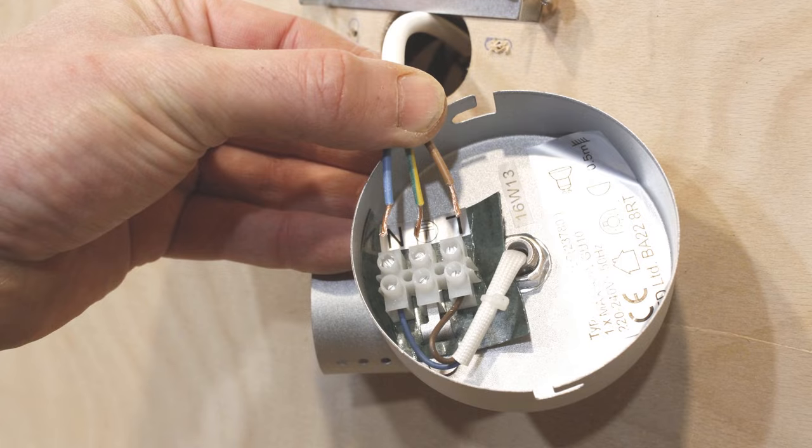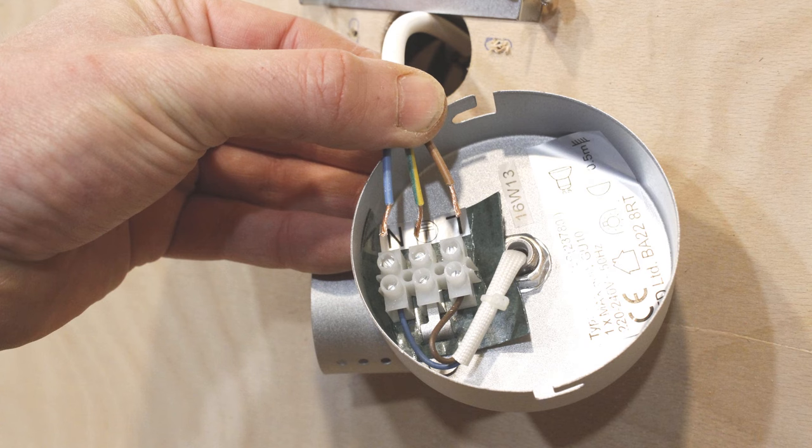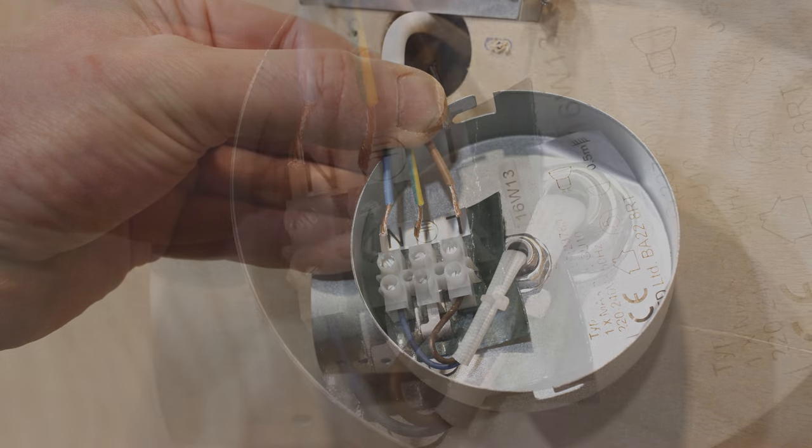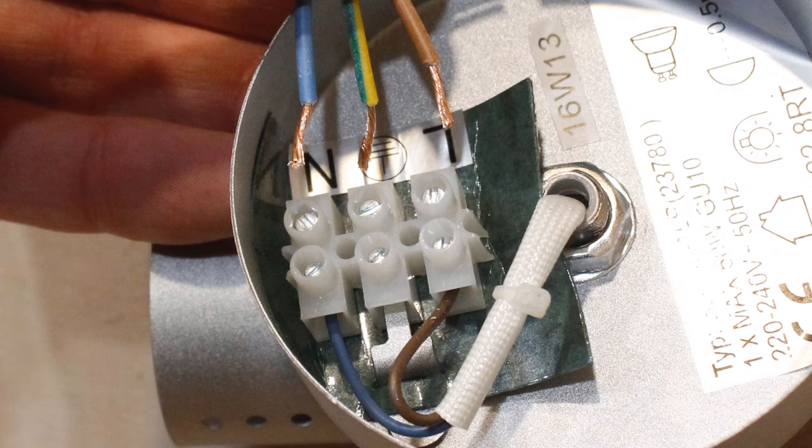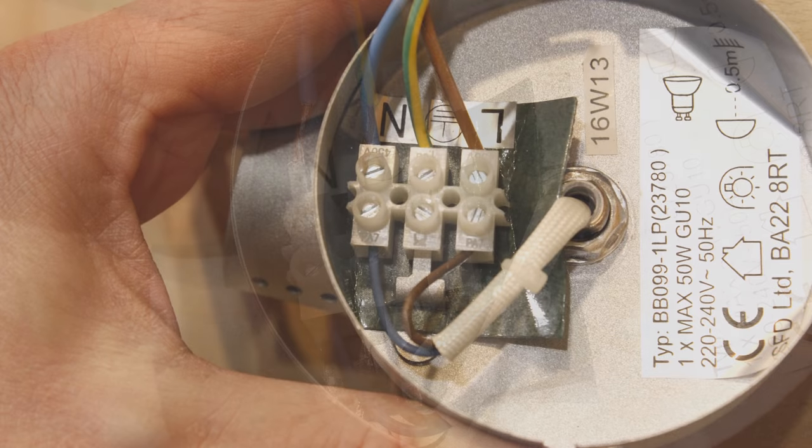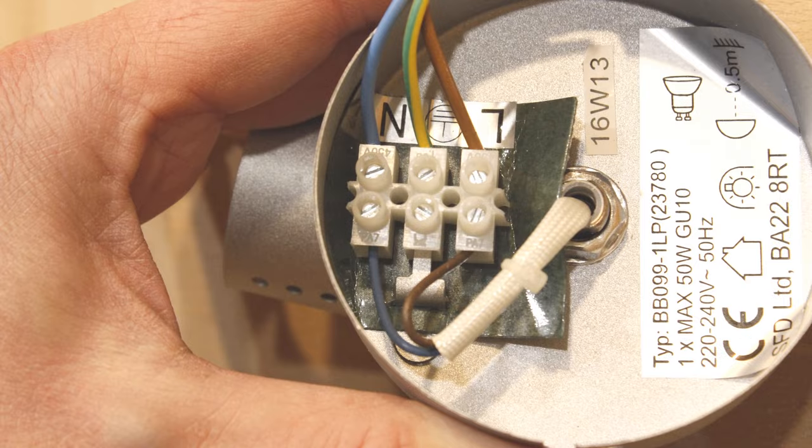So now we're ready to connect up the end of the flex to the actual light fitting itself. Now if you have a look here you can see there's three wires coming from the flex and three points to connect to the actual main light fitting. It can be a bit fiddly. So rather than show you a video how to do it you have to sort of figure that bit out yourself. But it is quite simple. And the end result is something like this.